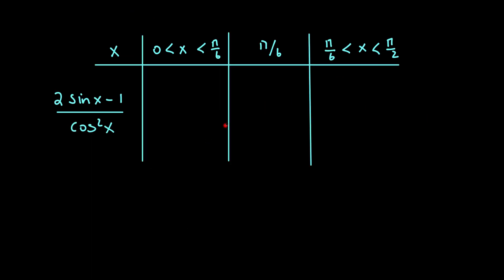So the next step would be to draw a nature table. And what we need to do is get values between 0 and π/6, and substitute them into the differentiated function to see whether it'll be positive or negative.